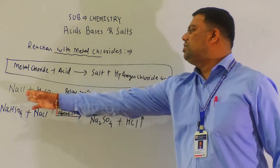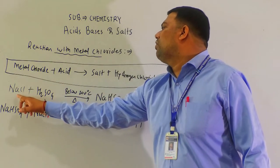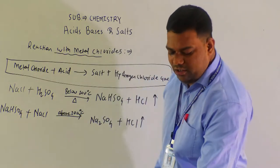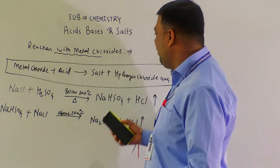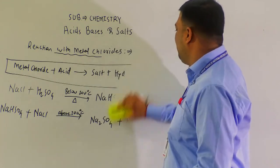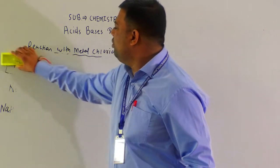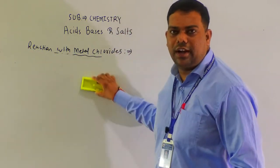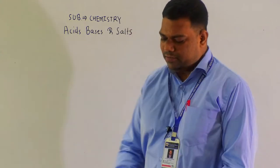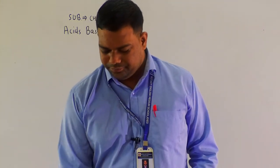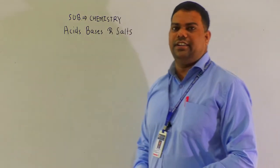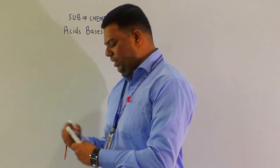Simply, above 200°C: NaCl + H₂SO₄ → Na₂SO₄ + HCl, by double displacement method. We separated the two steps by temperature difference: below 200°C and above 200°C.